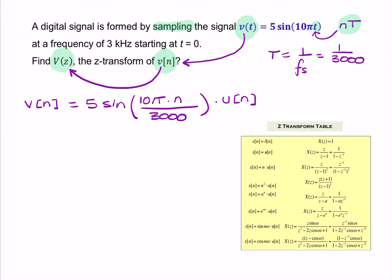So, now, to find v(z), I need to find the z-transform. And to do that, we can simply use the table. So, we're looking for a sine. So, we're looking for that expression there.